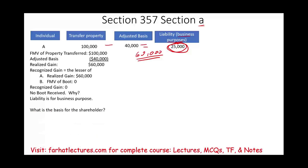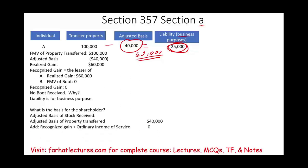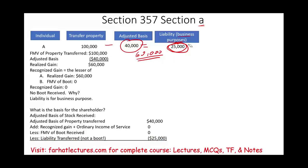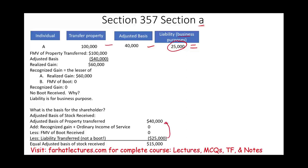What is the basis for the shareholder? Start with the adjusted basis: $40,000. Add recognized gain: none. Add ordinary income from services: none. Less fair market value of boot received: none. Less liability transferred (not a boot): $25,000. Therefore, $40,000 minus $25,000 equals an adjusted basis of $15,000. The liability reduced the basis because the corporation also assumed $25,000 of liability. That's Section 357A — liability is not a boot.